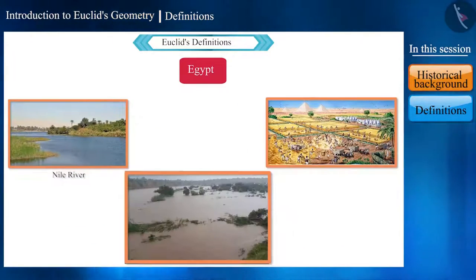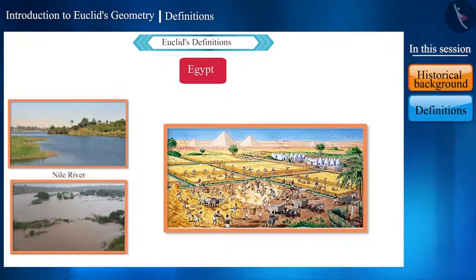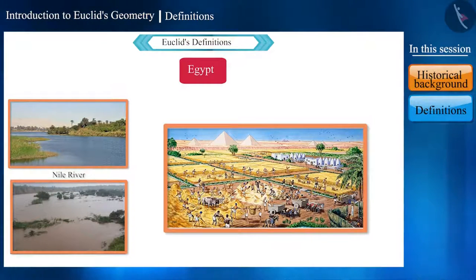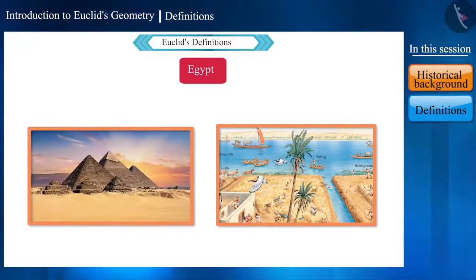They faced many difficulties to rebuild those boundaries the same way. Egyptians developed many geometrical techniques and rules to solve these problems. Looking at the canals and pyramids, we can easily say that they used their knowledge in their construction also.